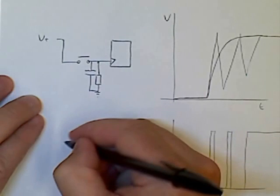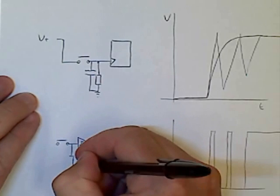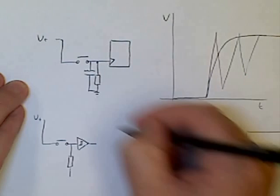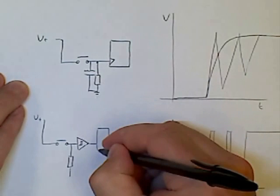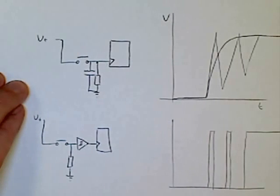And this then is the input to my flip-flop. So the Schmitt buffer there.